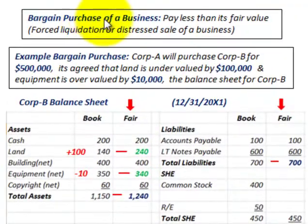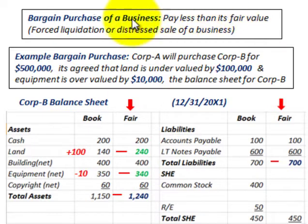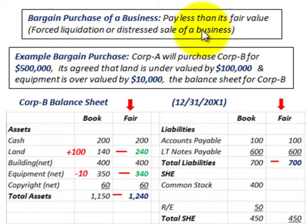Here we're going to be looking at a bargain purchase of a business. A bargain purchase is where the company that's buying out another company is going to pay less than the fair value of the company that's being purchased. This is usually due to a forced liquidation or distress sale of a business.